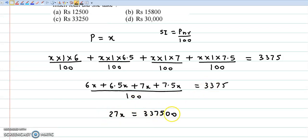And this 100 we multiply here, so double 0. So X is equal to 337500 divided by 27. 337500 divided by 27 is 12500. So the correct answer is option A, 12500.